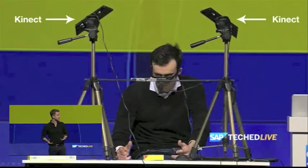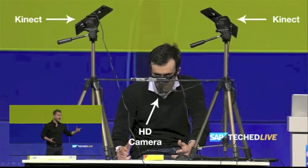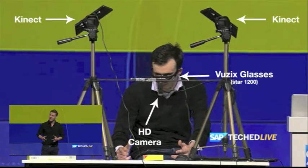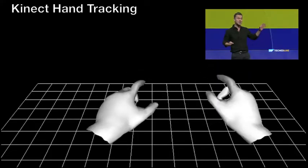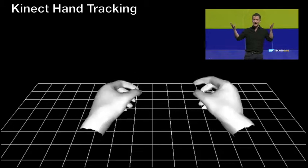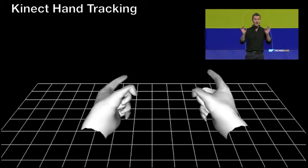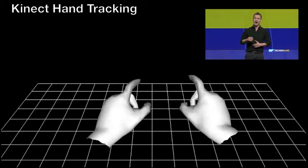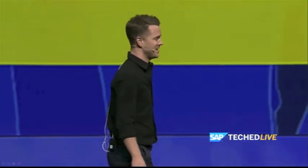We've built the system using two Microsoft Kinects, an HD camera, and a pair of Vizix glasses. The two Kinects are tracking Will's hands and fingers, so he's just going to make pinches and points in the air and we're going to interact with Hannah. But enough talking — let's look at CEO Vision.